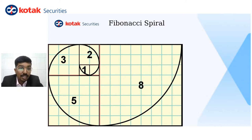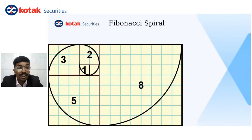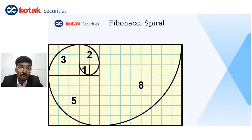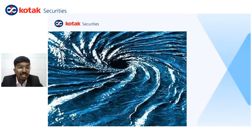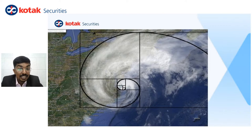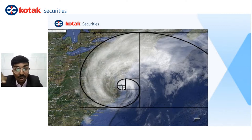Speaking about the Fibonacci spiral — it is a sum. If you look at boxes denoted as 1, 1, 2, 3, and you make those boxes and join them, you get the Fibonacci spiral. If we observe a whirlpool, it follows the Fibonacci spiral. When it comes to a hurricane, the hurricane's vicinity also runs according to the Fibonacci spiral.